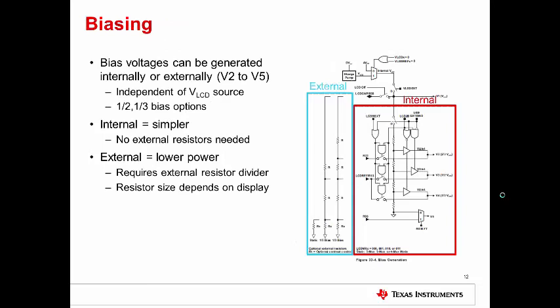The voltage V1 from the waveforms we saw earlier is generated by VLCD, which can be sourced either externally or from the internal charge pump. To produce the rest of the voltages in the waveforms, V2 through V5, you need to be able to produce the bias voltages at fractions of VLCD. This can also be generated either internally or externally, and it can be set entirely independent of how you've chosen VLCD to be sourced. Depending on the muxing and specific MSP430 device you are using, different bias options like one-half and one-third are available. Generating the bias voltages internally is simpler because you do not have to provide any external resistor dividers. However, generating the bias voltages externally can be lower power. However, it requires you to provide external resistor divider circuitry. The resistors in the divider should all be the same as each other, but the size used will depend on your particular display that you are driving.